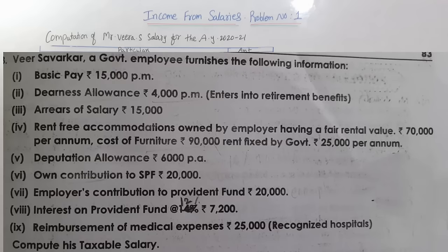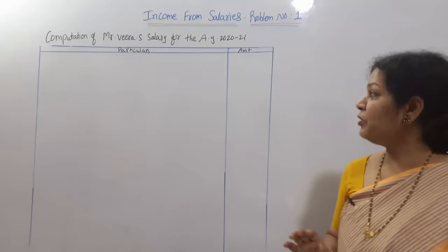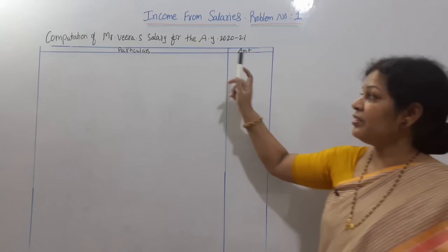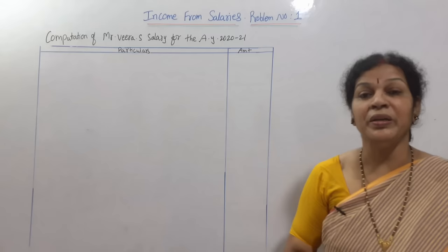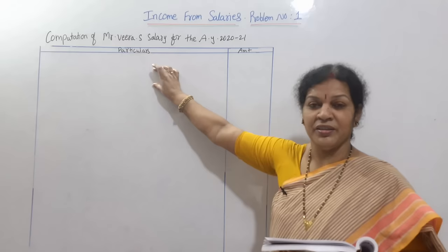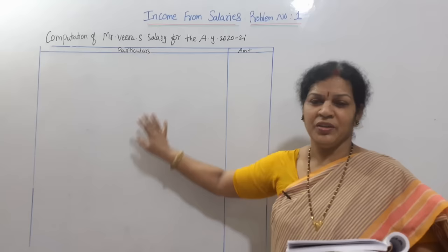Reimbursement of medical expenses ₹25,000 from a recognized hospital is also not taxable — we don't consider it. Now I'll show you the problem and working notes. I have written: computation of Mr. Vera Sarwakar's salary for the accounting year 2020–21. First we take salary, then allowances, then perquisites, then profit in lieu of salary if given. After the total, we apply any deductions.